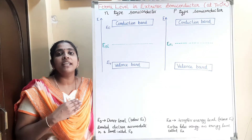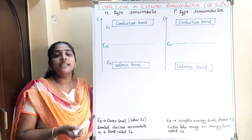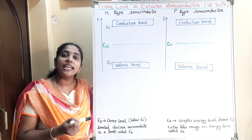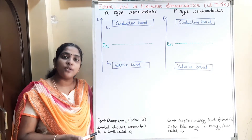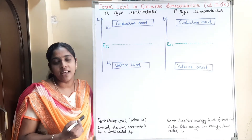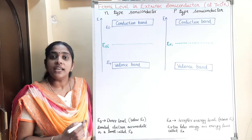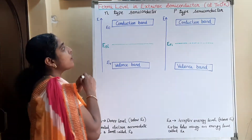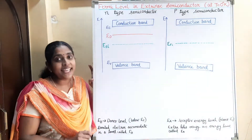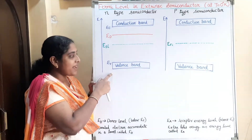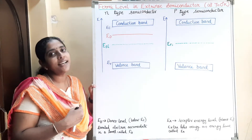First we can see the Fermi level in n-type semiconductor. In an n-type semiconductor, we are adding pentavalent impurity atoms. These pentavalent impurity atoms are donating electrons to the semiconductor, so the atoms added are called donor atoms. These donated electrons will accommodate themselves in an energy level called the donor energy level. This donor energy level will be near to and below the conduction band, since the donor atoms are giving electrons to the conduction band. So in an n-type semiconductor, in addition to the conduction band and valence band, there is an extra energy level — the donor energy level — that is slightly below the conduction band.